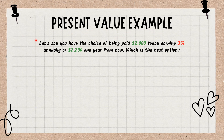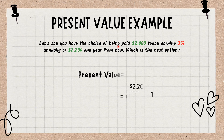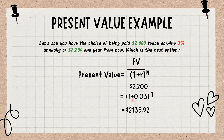Let's see an example of present value. You have the choice of being paid $2,000 today earning 3% annually, or $2,200 one year from now. Which is the best option? Using the present value formula, the calculation is $2,200 divided by (1 + 0.03) to the power of 1, which equals $2,135.